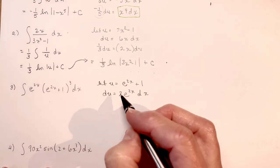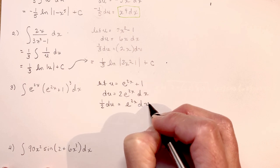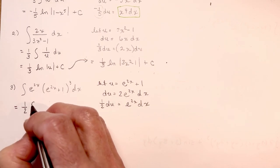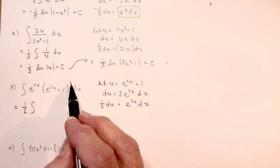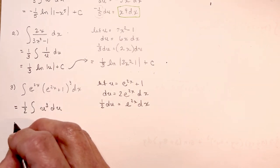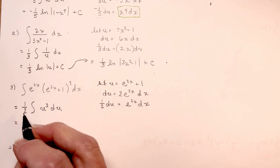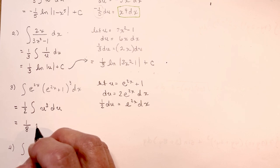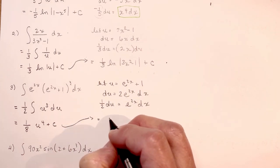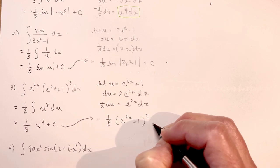I wanted e to the 2x, but I have 2e to the 2x, so I divide both sides by 2, giving me 1/2 du equals e to the 2x dx. That means I substitute to get 1/2 times the integral of u cubed du. I add 1 to get power 4, divide by 4, giving me 1/8. So the result is 1/8 u to the 4th plus c. Plugging back in: 1/8 times the quantity e to the 2x plus 1, all to the power 4, plus c.